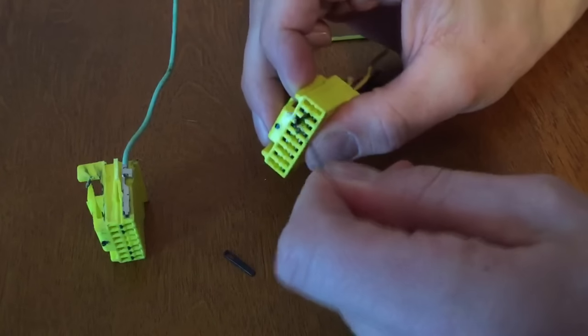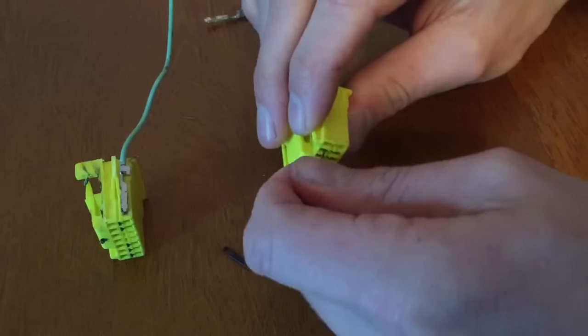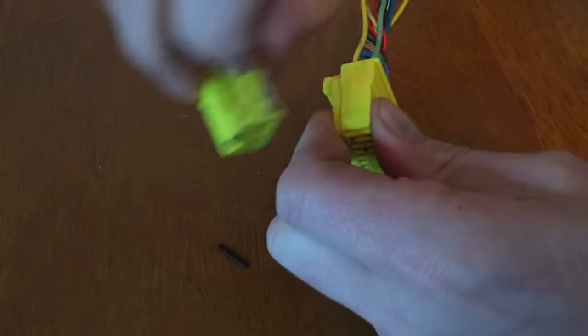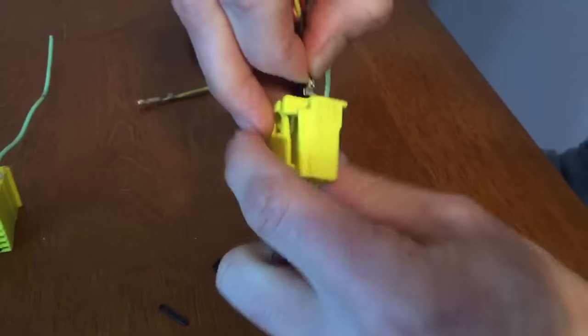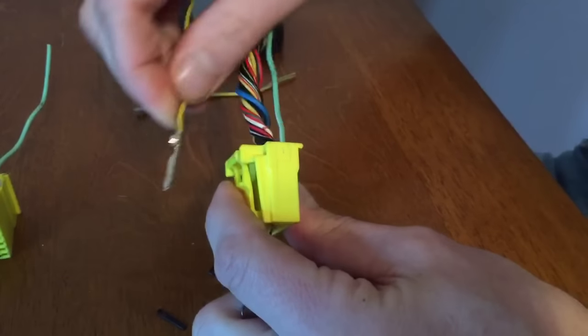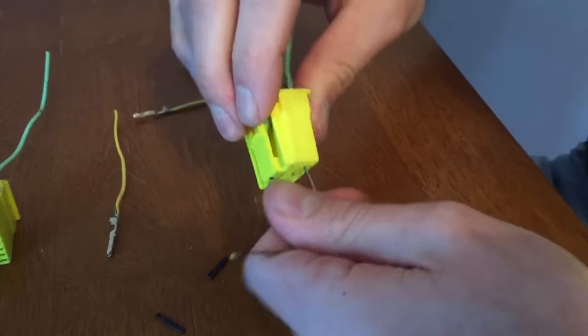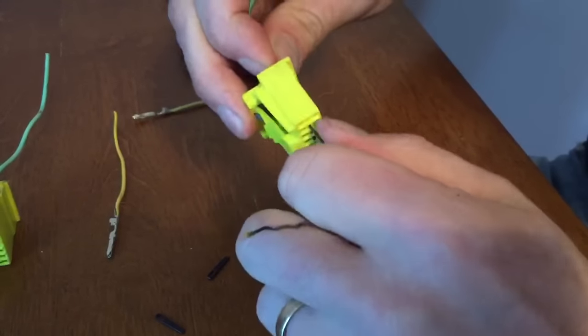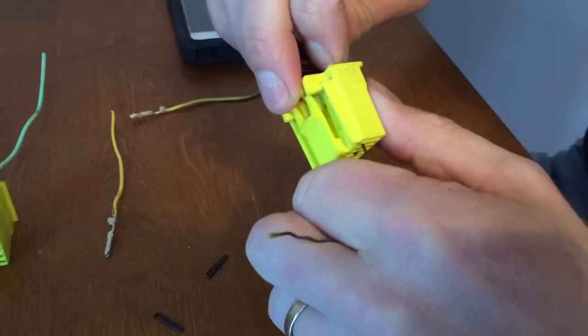So you pull this black clip out, then you push it on here and you hook the pin onto this little tab. When you do that, you can pull the pin right out. See, we'll do it to another one. You flip the pin over to do the other side. Once you've done it a few times, it becomes fairly easy.